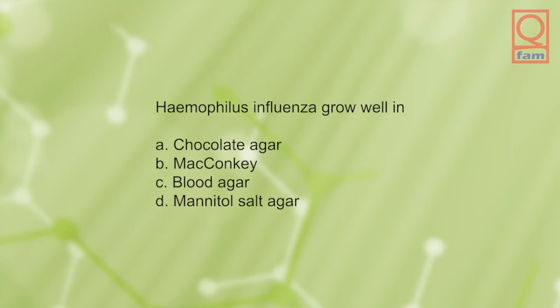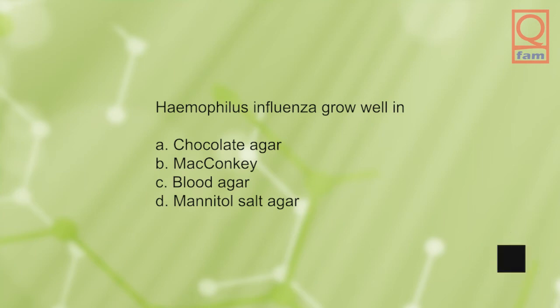Haemophilus influenzae grows well in: A) chocolate agar, B) MacConkey, C) blood agar, D) mannitol salt agar. The answer is A, chocolate agar.